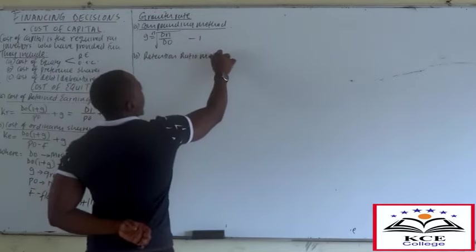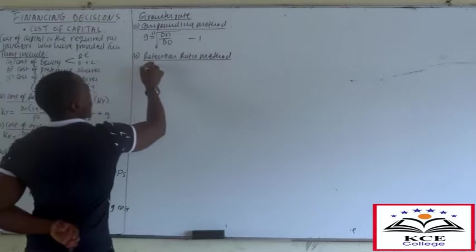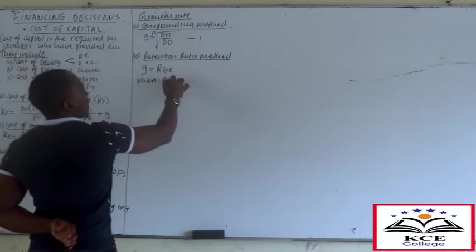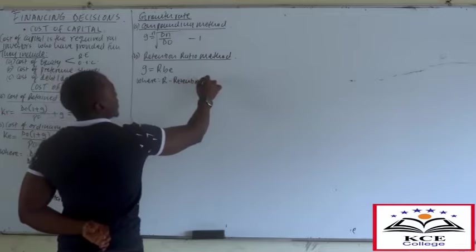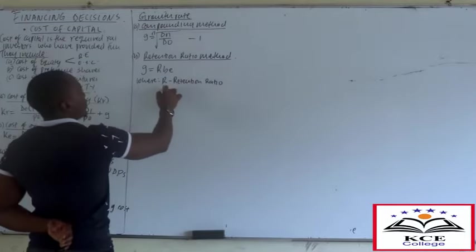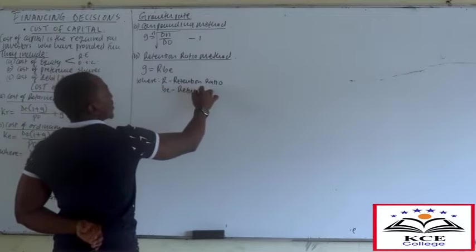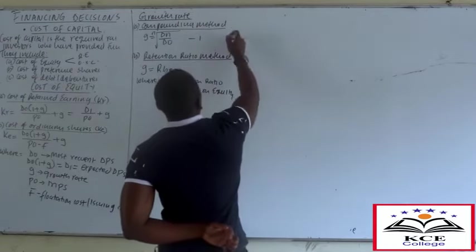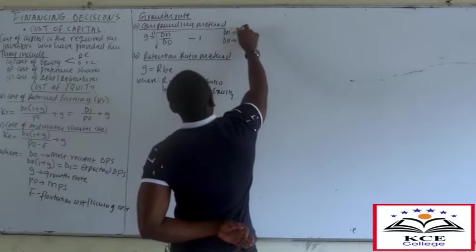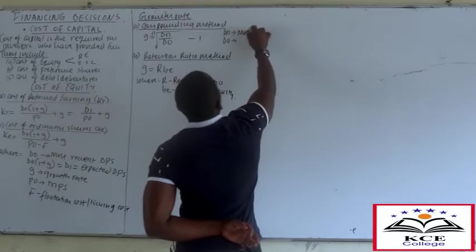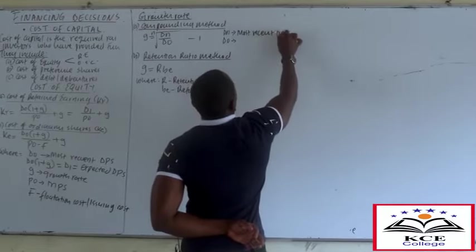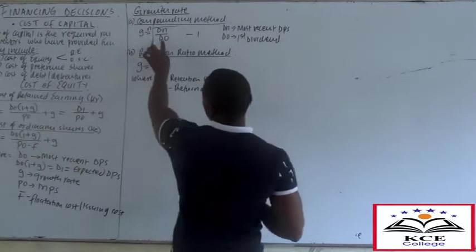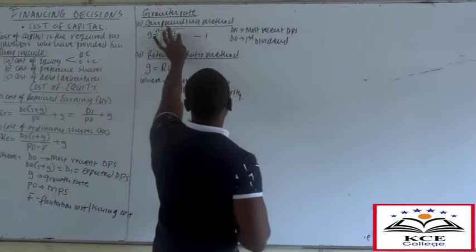For the compounding method, dN is the most recent dividend per share and d0 is the first dividend - don't confuse these. When determining the growth rate, d0 is the first dividend and dN is the most recent. But when computing the cost of capital, d0 becomes the most recent dividend.